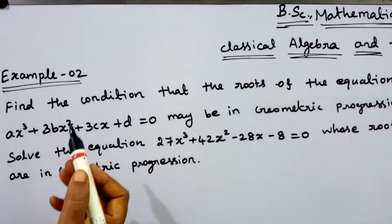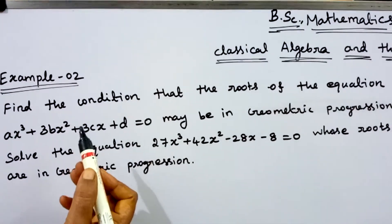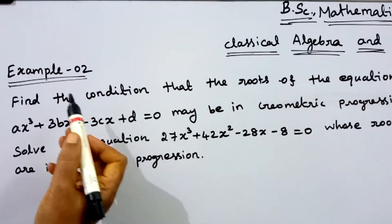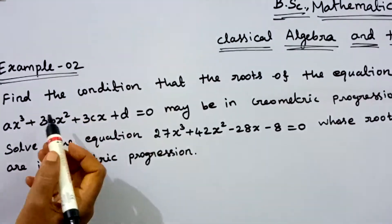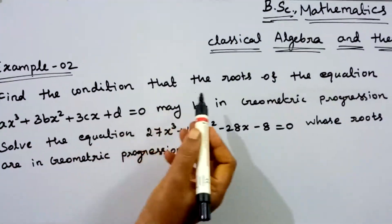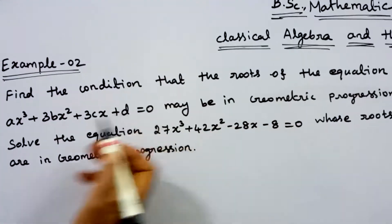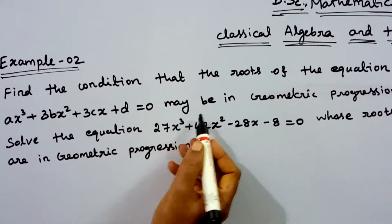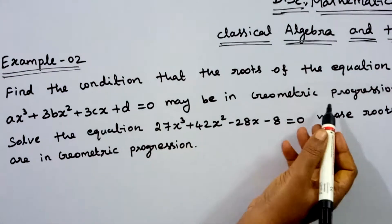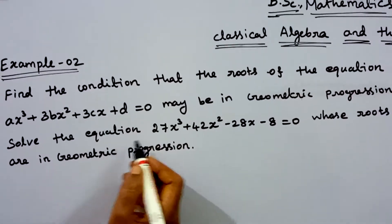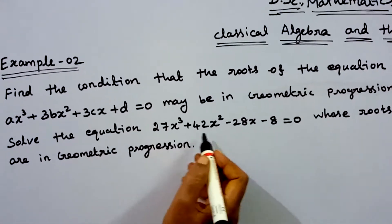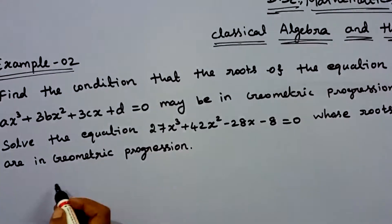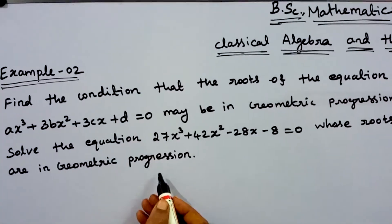Good morning students. We will discuss problems on the relation between roots and coefficients. In this video, we discuss Example 2: Find the condition that the roots of the equation ax³ + 3bx² + 3cx + d = 0 may be in geometric progression. Then solve the equation 27x³ + 42x² - 28x - 8 = 0 whose roots are in geometric progression.